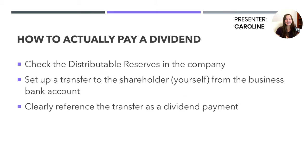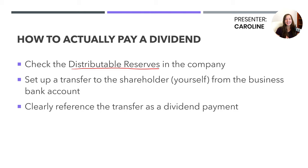Moving on to how to actually pay a dividend from your limited company. Once you've checked the distributable reserves — so if you're using accounting software, everything is updated, it's telling you that you can take a certain amount of dividends, and you're 100% sure it's up to date, perhaps with an accountant's help — then you can set up a transfer to the shareholder or shareholders from the business bank account and clearly label this transfer as a dividend payment. Before you transfer the money, there are some record-keeping requirements.